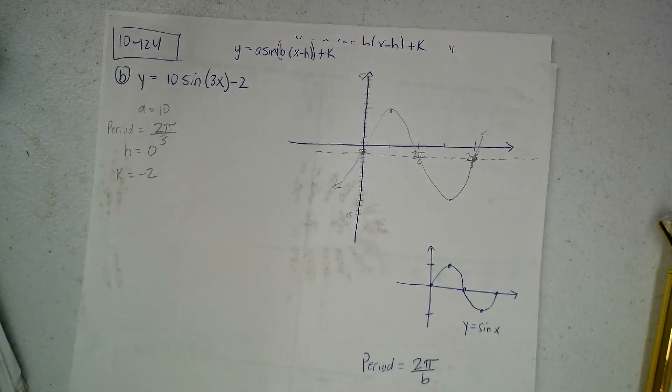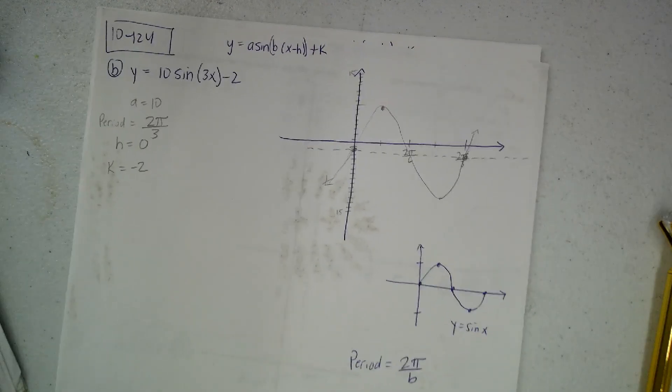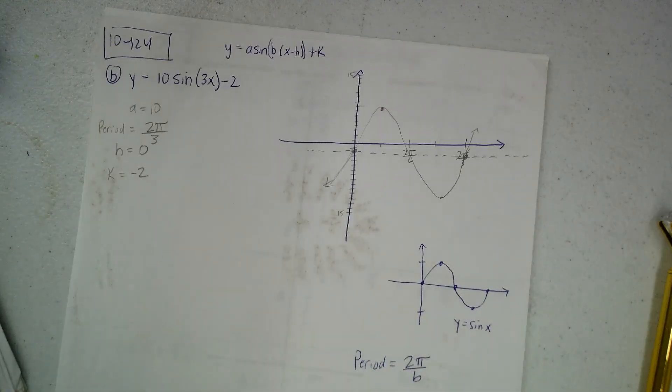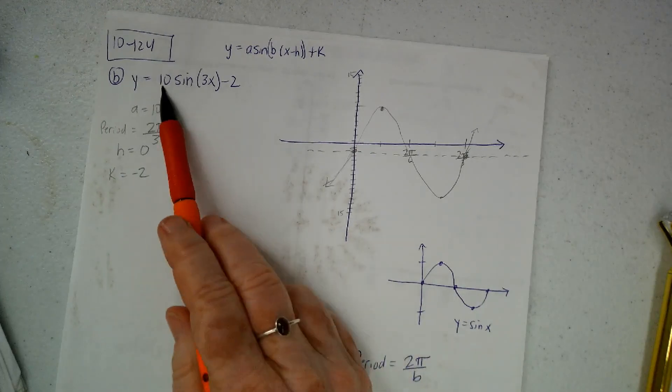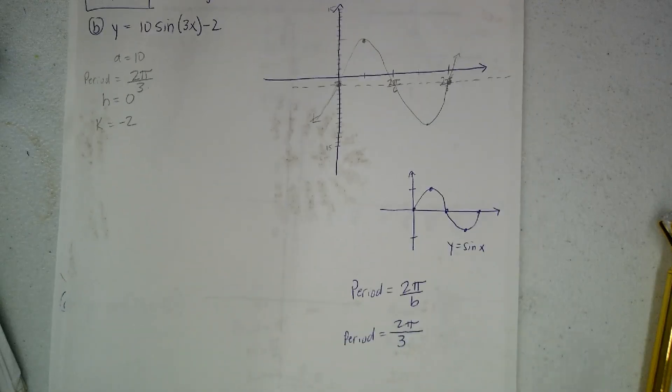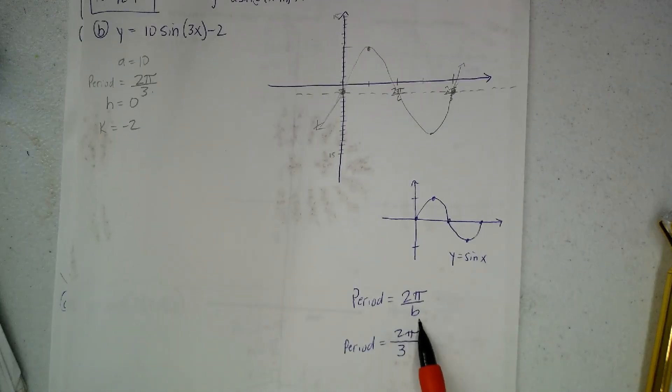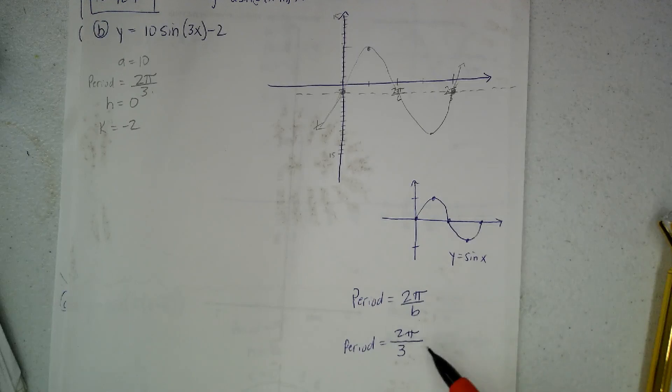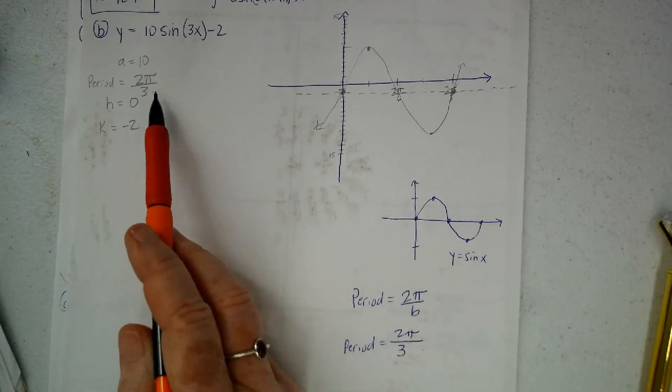Now letter B. Letter B is 10 times sine of 3x minus 2. So I look here to find A, and that's 10. And then I like to find my period. So period is 2π over B. But 3 was in the B position, so I got 2π over 3. So that's my period.